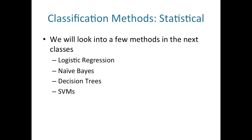In this course, we're going to look into several statistical classification methods. Today we'll look into logistic regression and Naive Bayes. Next week, we'll look into decision trees and support vector machines. These are some of the most popular classification methods being used nowadays.